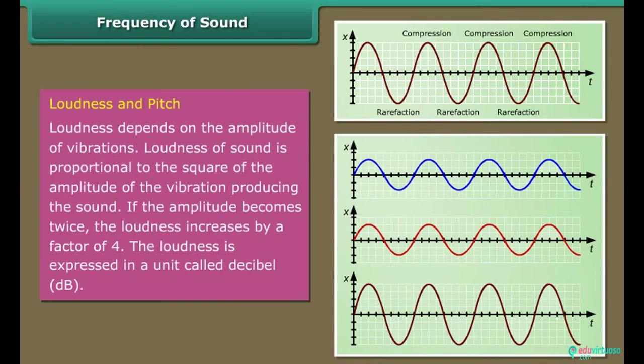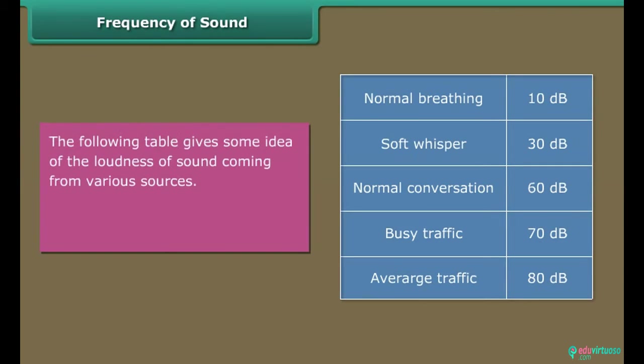Loudness and pitch. Loudness depends on the amplitude of vibrations. Loudness of sound is proportional to the square of the amplitude of the vibration producing the sound. If the amplitude becomes twice, the loudness increases by a factor of four. The loudness is expressed in a unit called decibel dB. The following table gives some idea of the loudness of sound coming from various sources. Above 80 dB, the noise becomes physically painful.